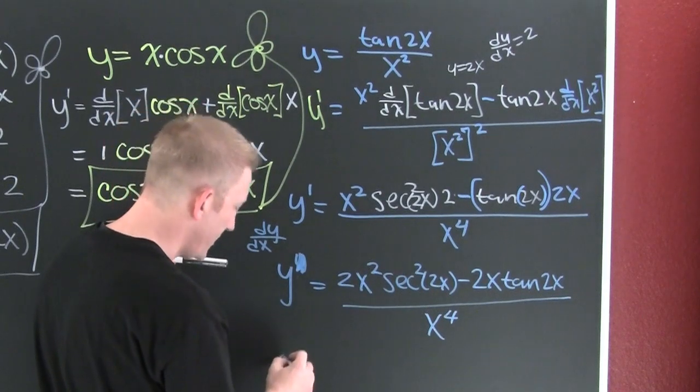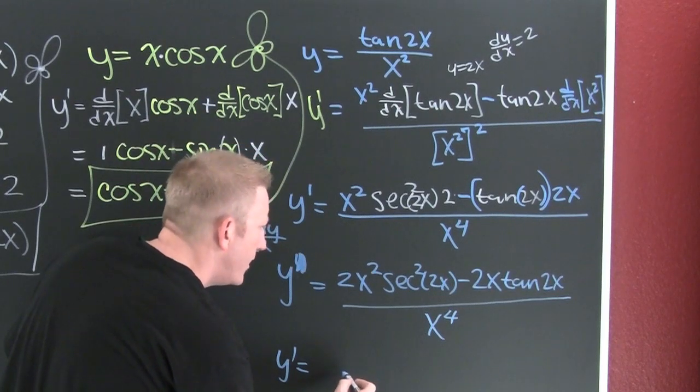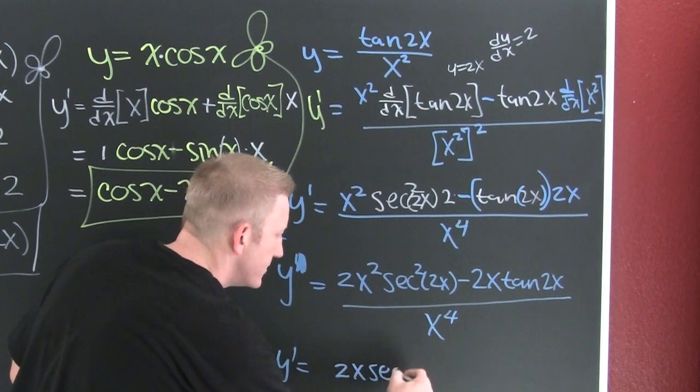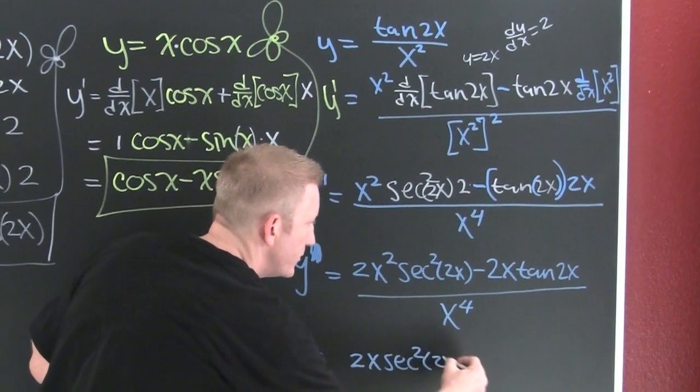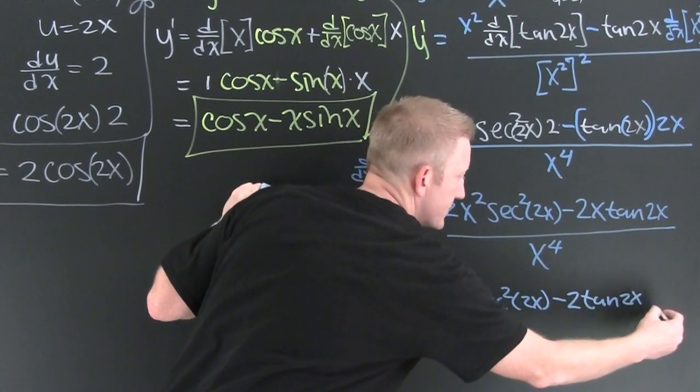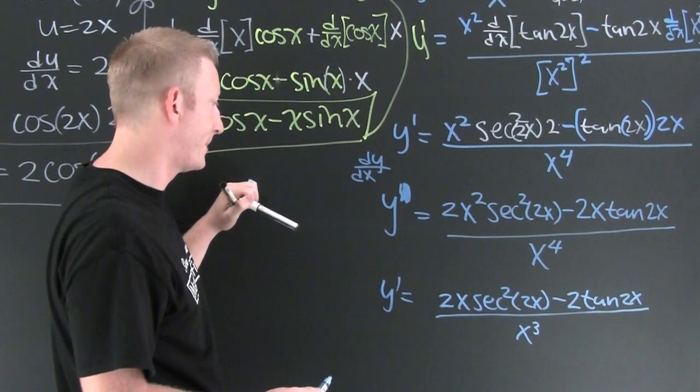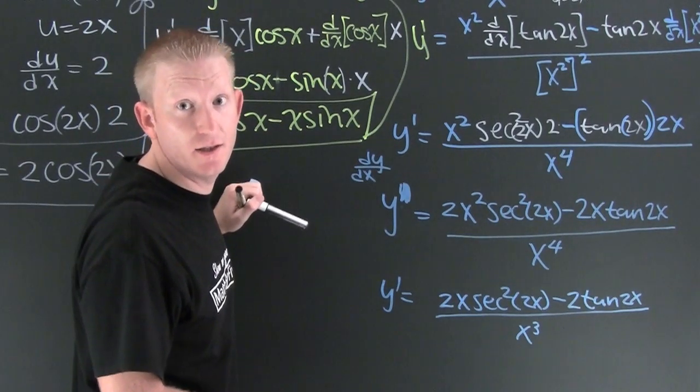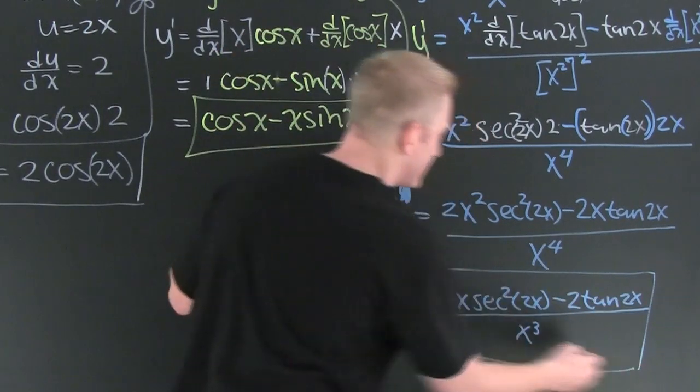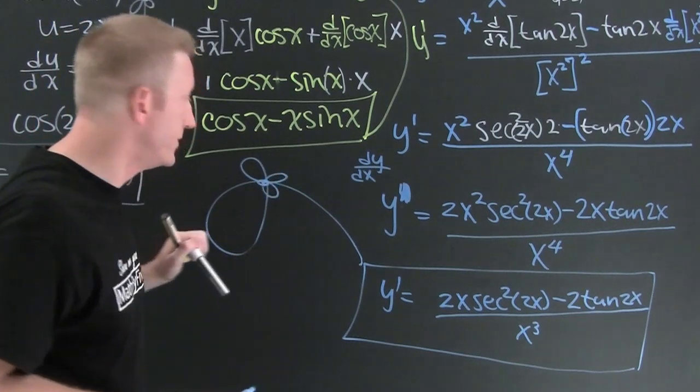So then your final form for your answer should look a little something like this. Yeah, why not, 2x secant squared 2x minus 2 tangent 2x all over x to the third. And then what? A box, and a big pedaled flower.